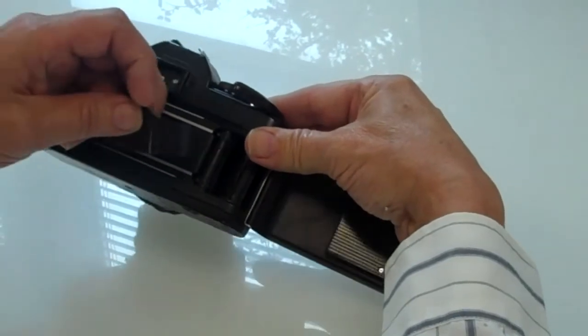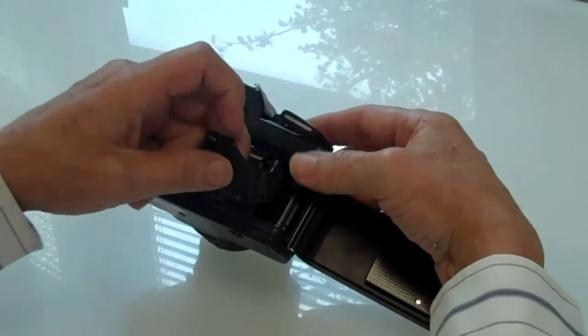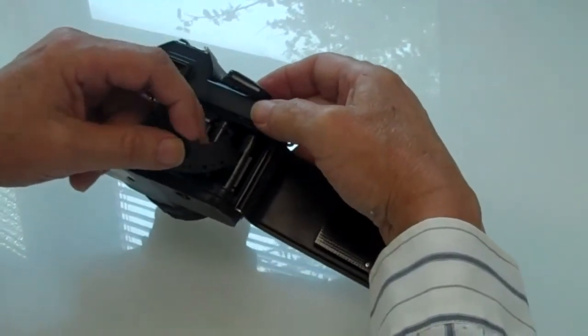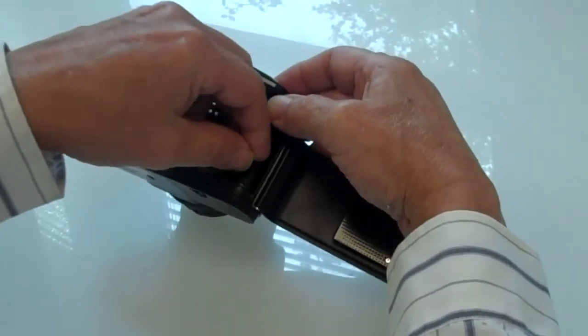Now, pull your film out and you'll see this little tail, which is cut like this, and see these slots right here on this spool, on this take-up reel? You want to insert into a slot as far as you can.